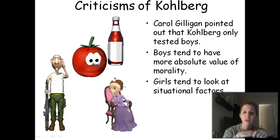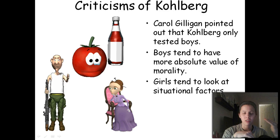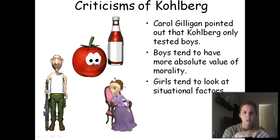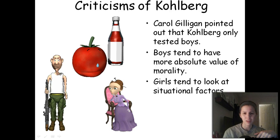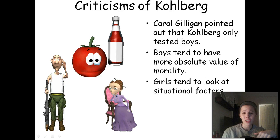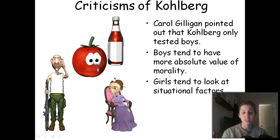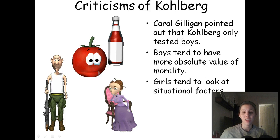Another big criticism is that Kohlberg's theory favored Western individualized thinking. Because his post-conventional stage was all about your personal principles transcending society's morals, if you're in an Asian culture that values the group over the individual, nobody would reach that highest post-conventional level. It can also be seen as dangerous — if society values life but someone in the post-conventional stage decides murder is acceptable to them, that person is dangerous for society even though they're at the so-called highest level of moral development.